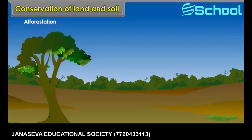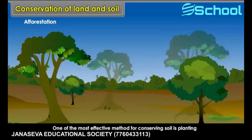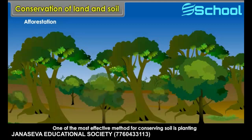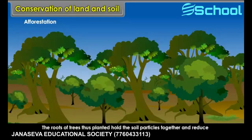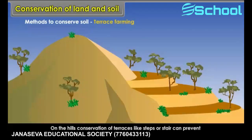Afforestation. One of the most effective methods for conserving soil is planting more trees. The roots of trees thus planted hold the soil particles together and reduce soil erosion. Terrace farming. On the hills, conservation of terraces like steps or stairs can prevent soil erosion.